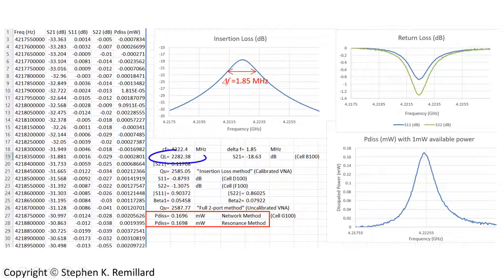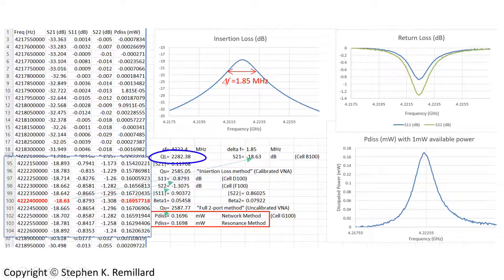If I scroll down to cell 100 where S21 hits its maximum and the dissipated power as well hits its maximum, I have this 0.1696 and I have S11 and S22 are also known. If I put all those numbers in here on resonance, S11 is -0.8793 and S22 is -1.3075.